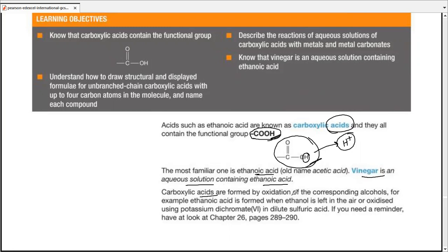Carboxylic acids were formerly made by oxidation of corresponding alcohols. For example, ethanol would produce ethanoic acid, propanol would produce propanoic acid, butanol would produce butanoic acid, and so on. I think this makes complete sense. So whenever ethanol was left in the air or oxidized using potassium dichromate(VI) in dilute sulfuric acid, you would form the corresponding carboxylic acid. That's pretty simple.